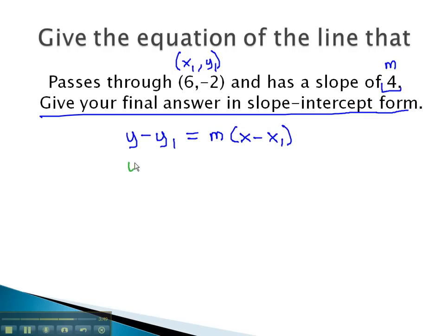Plugging in these key values, we get y minus y1, which is negative 2. Subtracting a negative is like adding positive 2, equals m, our slope is 4, times x minus x1, which we found was 6.